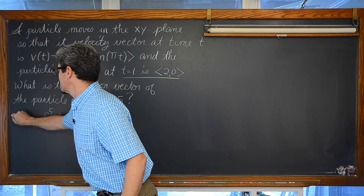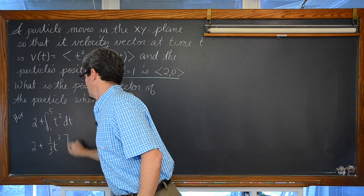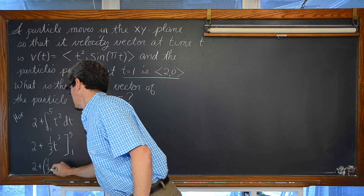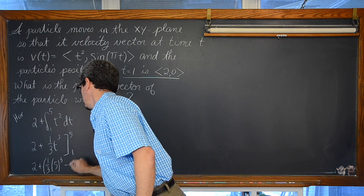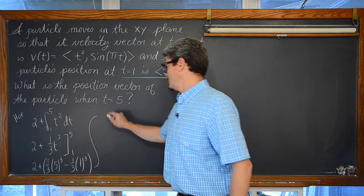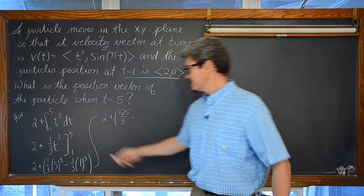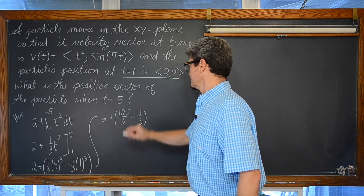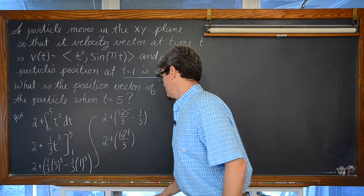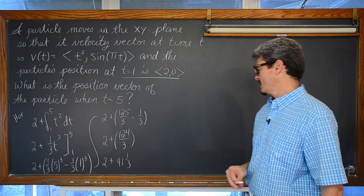So we have 2 plus the definite integral from 1 to 5 of t² dt. Integrating gives 2 plus [⅓t³] evaluated from 1 to 5. That is 2 plus ⅓(5³) minus ⅓(1³), which is 2 plus 125/3 minus 1/3, giving us 2 plus 124/3, which equals 43 and 1/3.